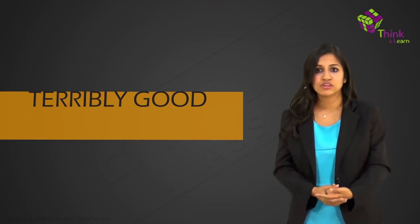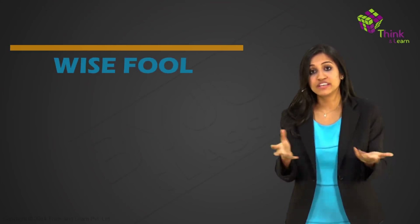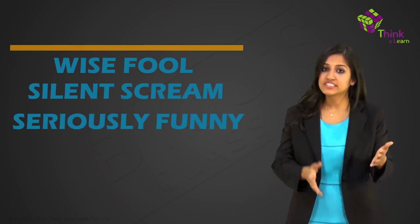She's terribly good. Terribly and good are totally opposite but this makes sense. And then there's one which doesn't: this old man is a wise fool, she gave a silent scream, this joke is seriously funny. Serious and funny, two opposite meaning words brought together to give some meaning. These are oxymorons.